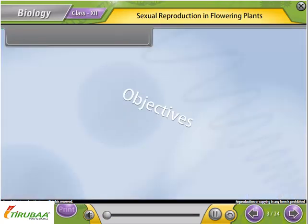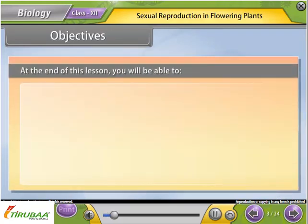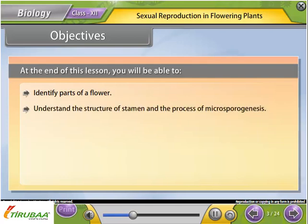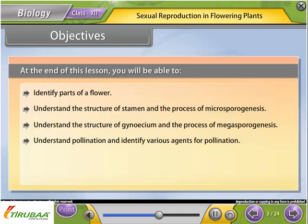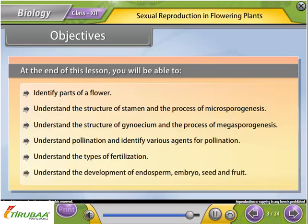Objectives: At the end of this lesson, you will be able to identify parts of a flower; understand the structure of stamen and the process of microsporogenesis; understand the structure of gynosium and the process of megasporogenesis; understand pollination and identify various agents for pollination; understand the types of fertilization; and also understand the development of endosperm, embryo, seed, and fruit.